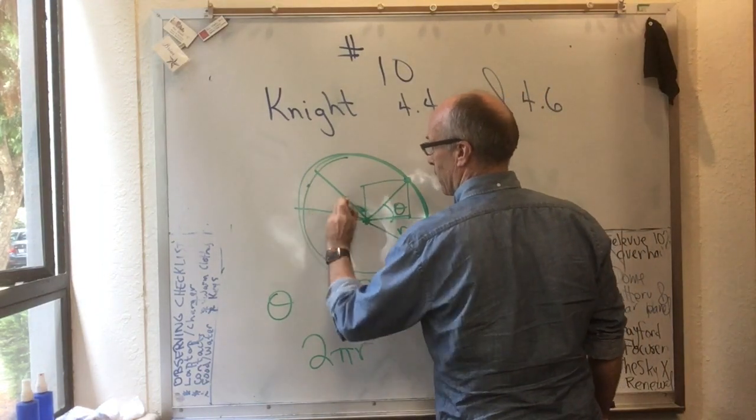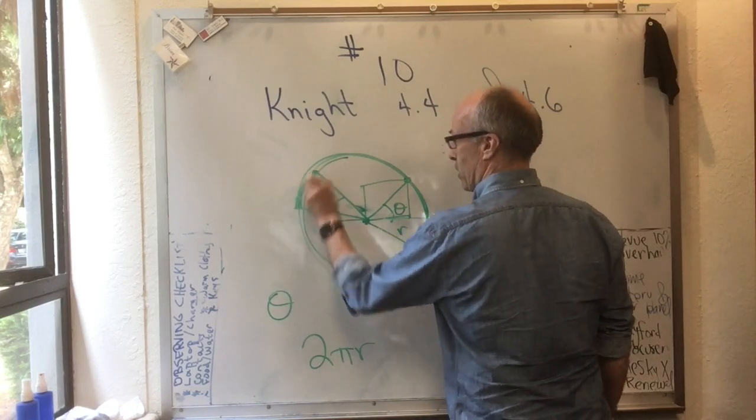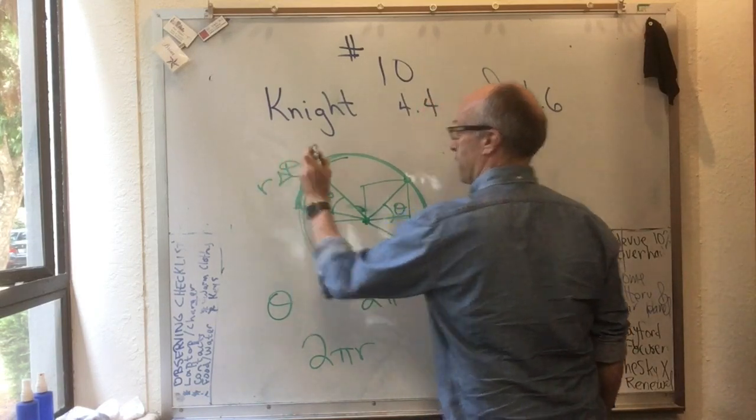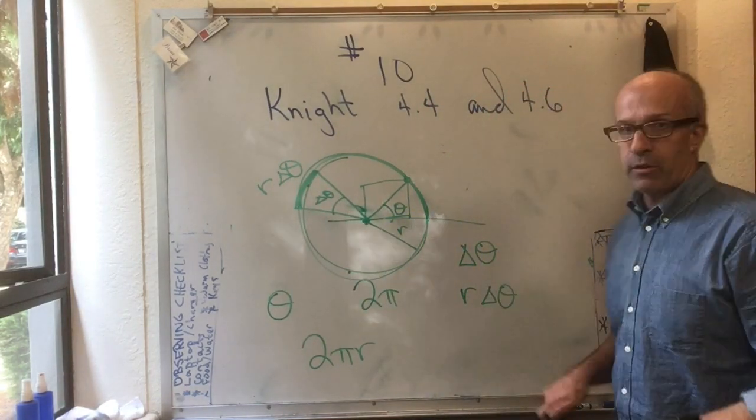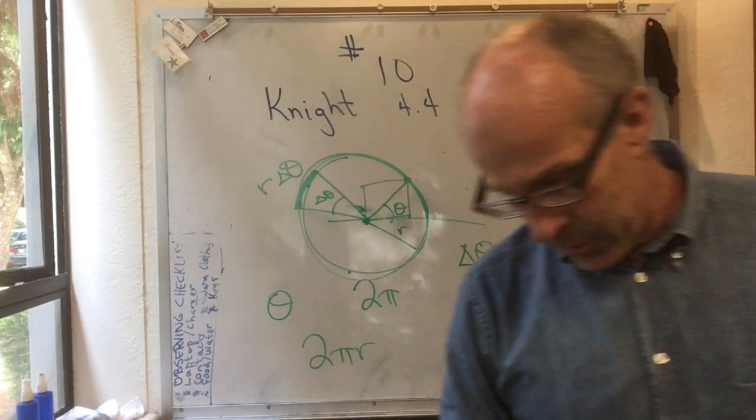Let's say I go from there to there, then this would be my delta theta, and that distance right there would be r delta theta. And this only works if you measure in radians.